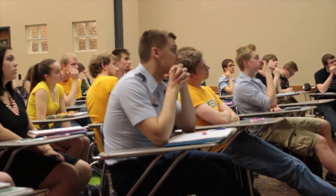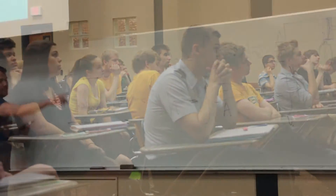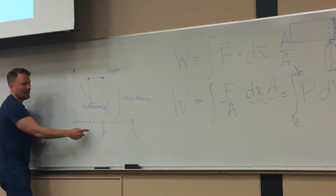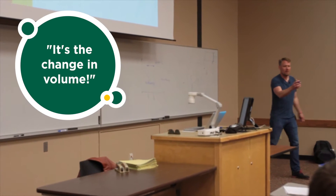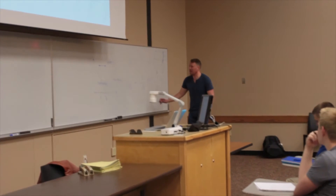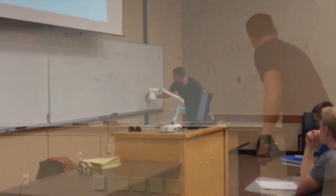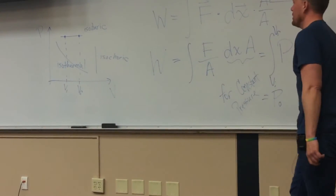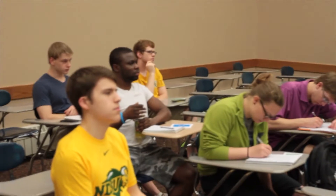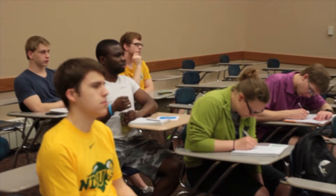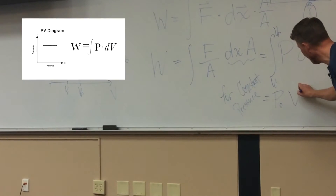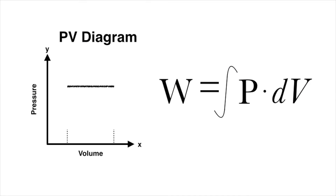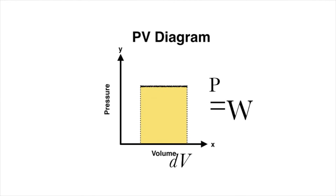In this particular case, we want to know the integral of PdV from some initial volume to some final volume. You get the change in V. So for constant pressure, you get P-naught — whatever the pressure happens to be — times whatever the change in V is. The integral of dV is just V evaluated from V-initial to V-final, so that's where you get that delta V. You get V-final minus V-initial.